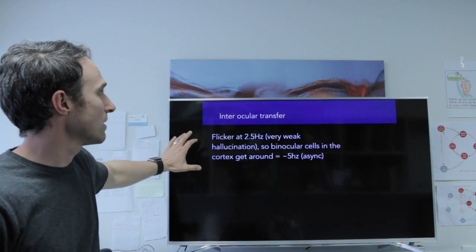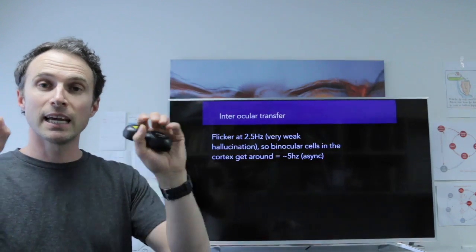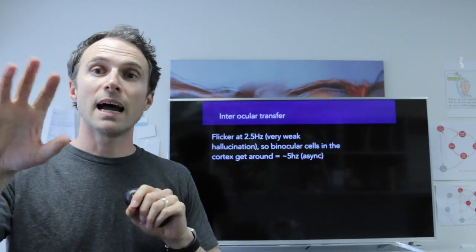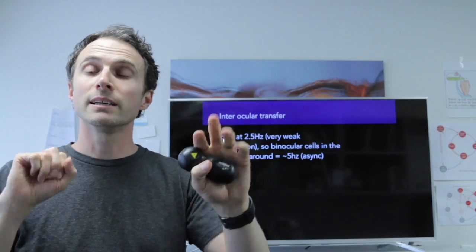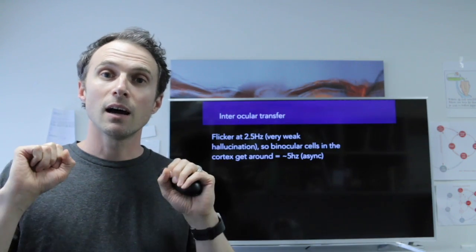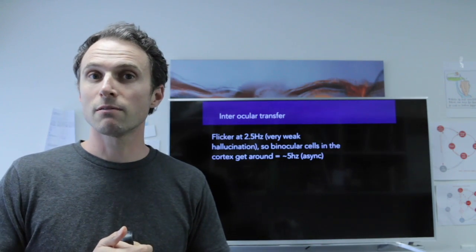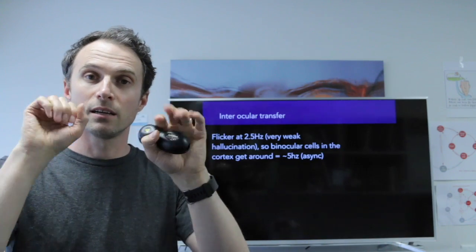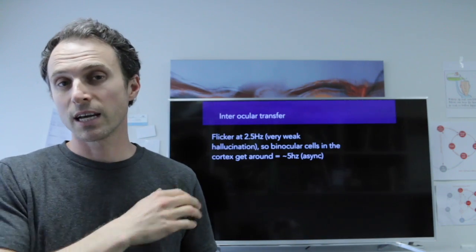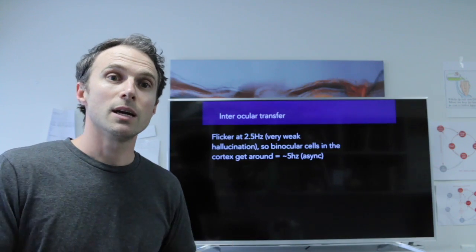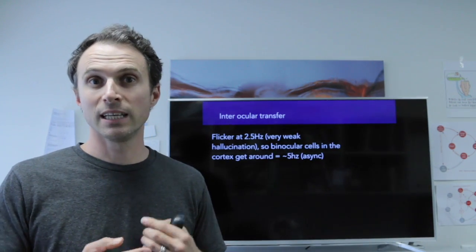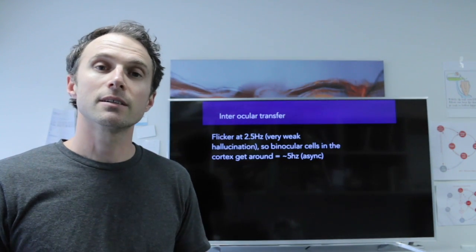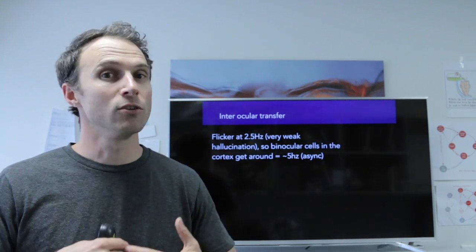And here's the idea, when we flicker that at a very slow rate and they're in sync going together, all the brain is getting that slow flicker. When they're out of phase, neurons in the brain that are receiving information from both eyes are getting double that frequency, almost around double that frequency. So rather than this, they're actually seeing twice that around, in this case, five hertz. So if people experience stronger hallucinations in this out of synchrony condition, that's good evidence that the hallucination is occurring in the brain and not in the eyes.